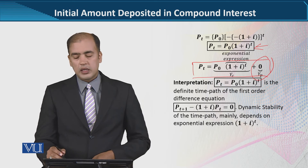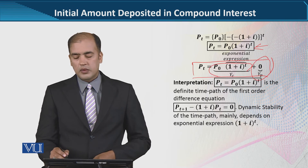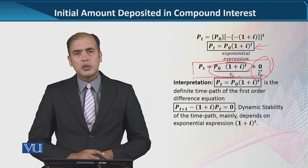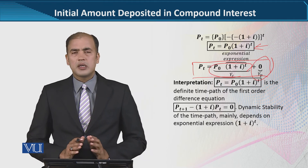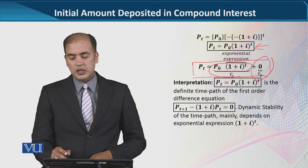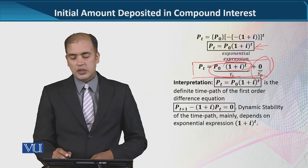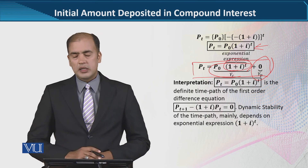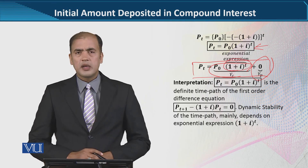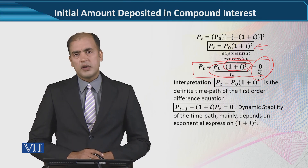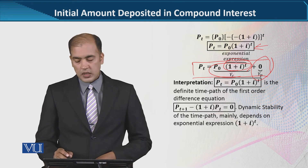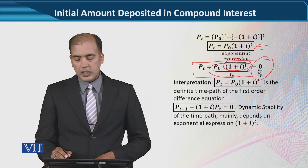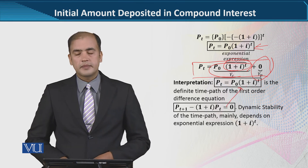This is our particular integral, this is our overall complementary function, and one part of it we call the exponential term. On this basis, you know, the determination of dynamic stability is made. This was the equation we built, and this is its time path.